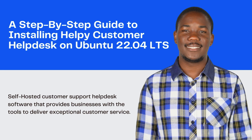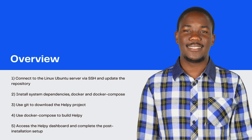First, I'll show you how to connect to the Linux Ubuntu server via SSH. I'll show you how to update the system repository, and I'll show you how to install the needed system dependencies. Second, I'll show you how to download and install Docker as well as Docker Compose. And third, I'll show you how to use Git to download the Helpy project.